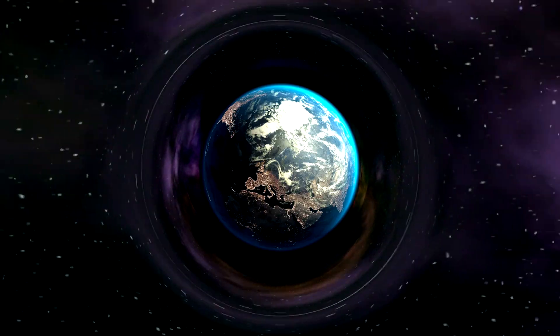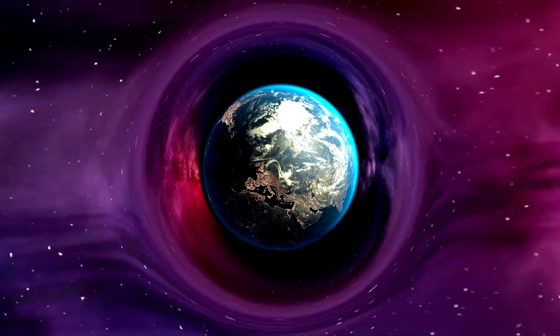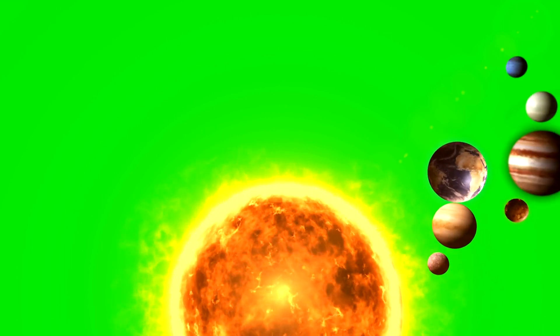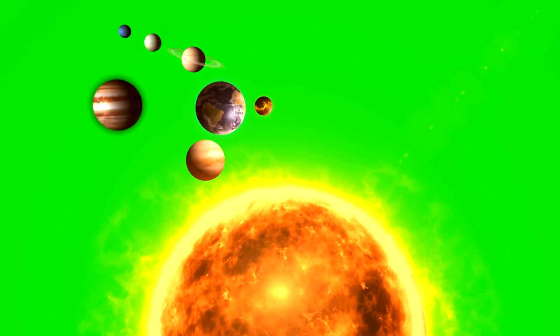Objects in space follow paths called geodesics, which are the straightest possible paths in curved spacetime. For instance, planets orbiting a star are following geodesics within the curved spacetime caused by the star's mass.